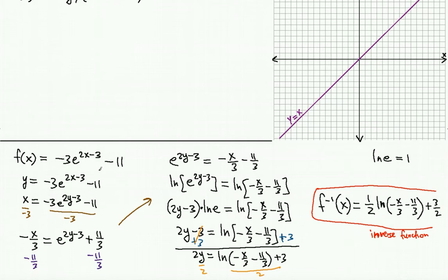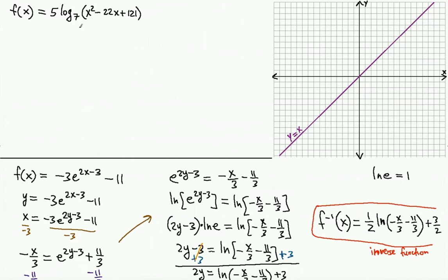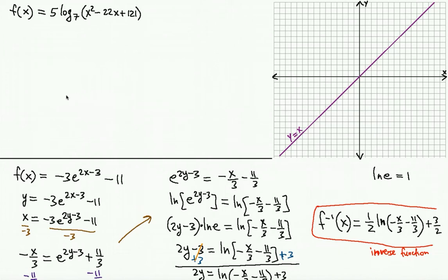That is your inverse function for the given function. As you can see, we had no trouble finding it, even though algebraically it was not that easy. There were no considerations about whether it's one-to-one — we definitely know it is, because exponential functions are all one-to-one. Now let's investigate the first example, because that one is NOT a one-to-one function. The input of the logarithm is a quadratic function.